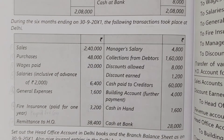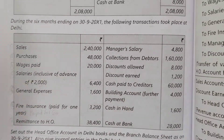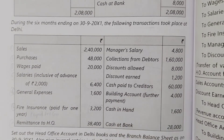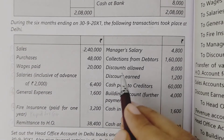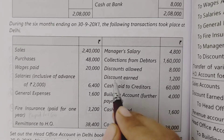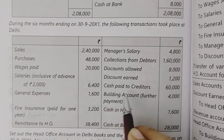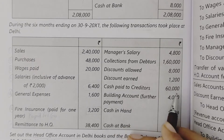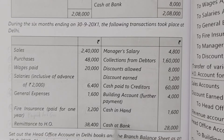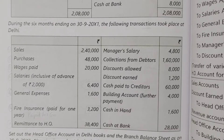Remittance to head office — debit head office account, credit cash $38,400. Manager salary paid — debit manager salary, credit cash $4,800. Collection from debtors — debit bank/cash, credit debtors. Discount allowed — debit discount allowed, credit debtors. Discount earned — debit creditors, credit discount received. Cash paid to creditors — debit creditors, credit cash. Building account purchased — debit building, credit cash. Closing balance for cash in hand and cash at bank recorded.